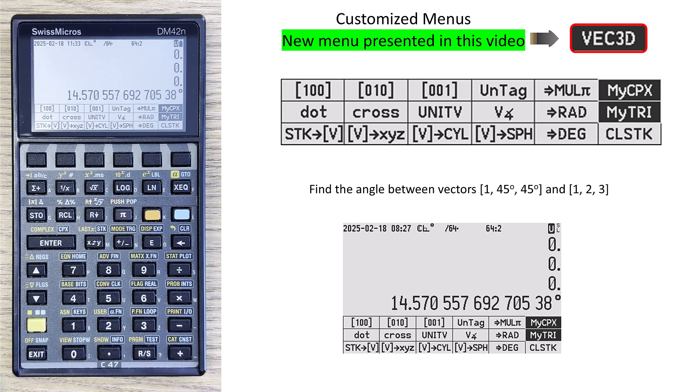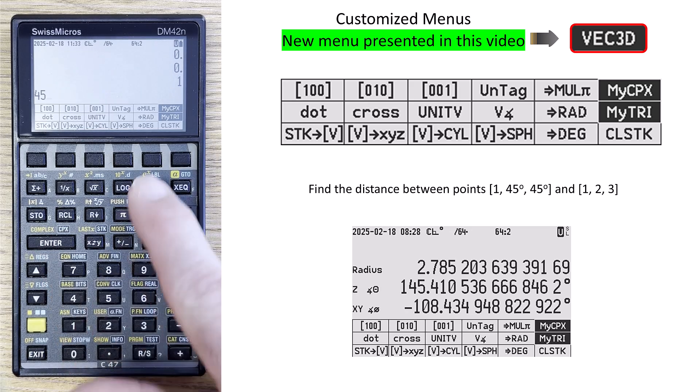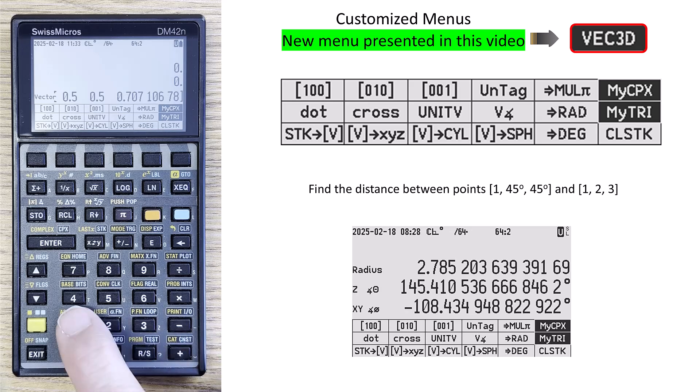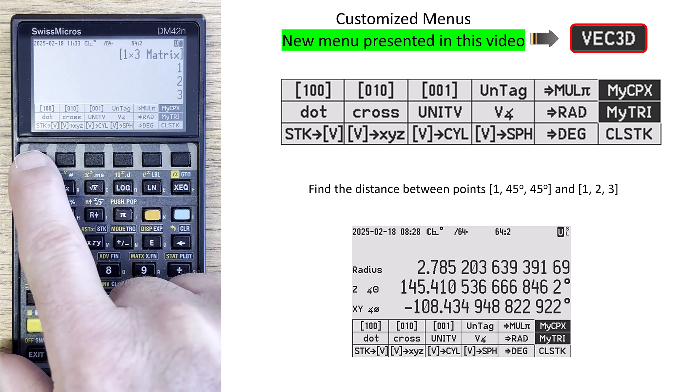And then one more problem. This time, let's find the distance between two points. We'll clear the stack. Again, it's 1, 45 degrees. Enter twice. Bring it in as a vector. Then the second one is 1, 2, 3. Bring it in as a vector.